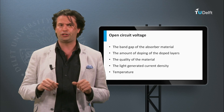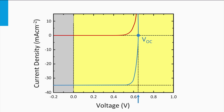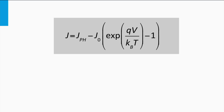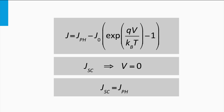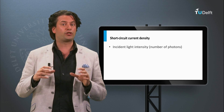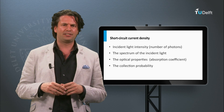If we short circuit both terminals of the solar cell, the illuminated solar cell will solely produce a current and no voltage. This current density is called the short circuit current density, and it can be recognized in the JV curve as the intersection between the vertical line at zero voltage and the JV curve. Using the JV relation with voltage equal to zero, the short circuit current density equals the photocurrent density. It depends on several factors: the incident light intensity, the spectrum of the incident light, the optical properties, and the collection probability.